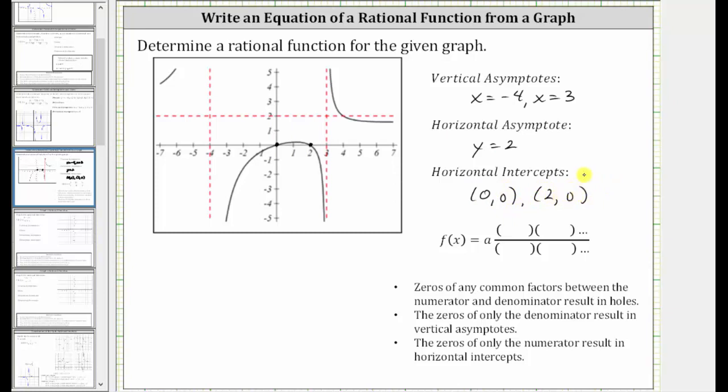And now we'll begin building the function in the form shown here, where we have f of x equals a, some constant, times a rational expression. Now looking at the notes, the zeros of any common factors between the numerator and denominator result in holes. We don't have any holes, and therefore we can skip this step.